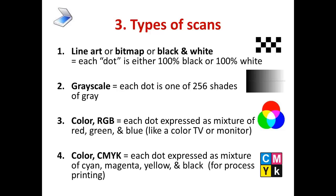Second kind is grayscale — each dot is one of 256 shades of gray. Third kind is color RGB, which stands for red, green, blue — each dot is expressed as a mixture of those colors, and this is the kind of color used on a color TV or computer monitor. Fourth kind is color CMYK — each dot is expressed as a mixture of the four process printing colors: cyan, magenta, yellow, and black. This is used for printing, not so much for on-screen presentation.